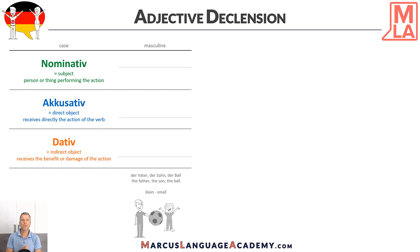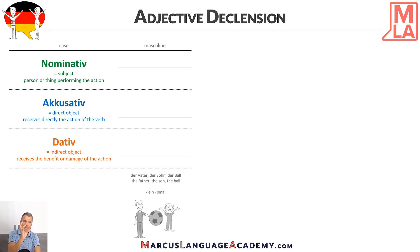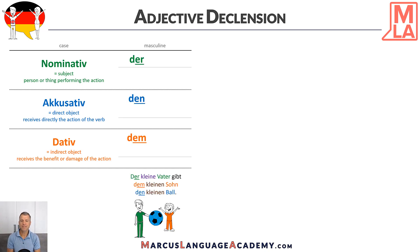Let's see an example when we use nouns — they are masculine. We will add to every noun an adjective. In this case, klein, meaning small. We have the nouns: der Vater, der Sohn, der Ball. Let's make a sentence to see what's going on when we add the adjective. The example sentence would be: der kleine Vater gibt dem kleinen Sohn den kleinen Ball.